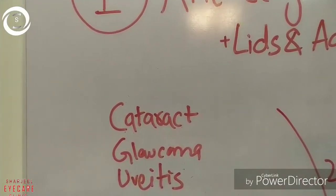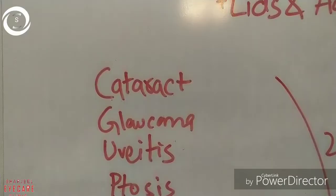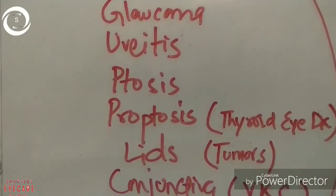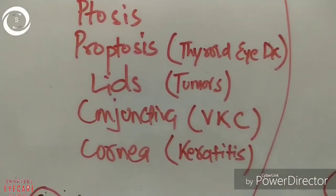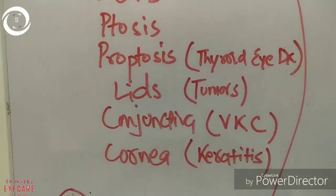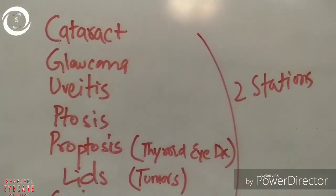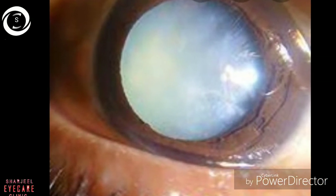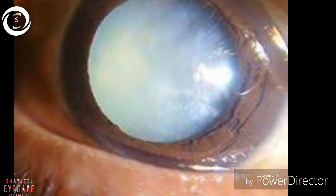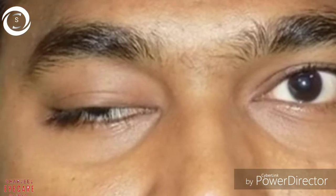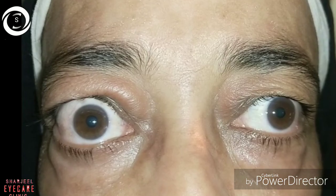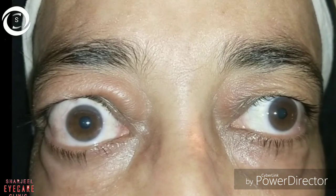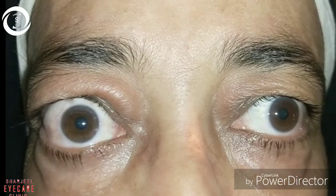Or we can take complications of cataract surgery like endophthalmitis. In glaucoma, either open-angle or closed-angle. Thyroid eye disease in proptosis, or keratitis in cornea — pictures will be shown, and you have to answer five questions: diagnosis and five related questions regarding treatment, investigations, signs, and symptoms. That's how you get two questions from the anterior segment.